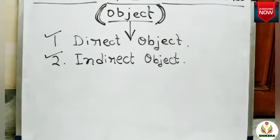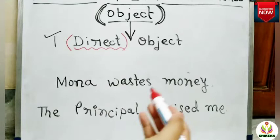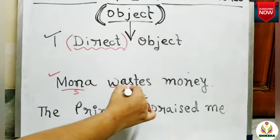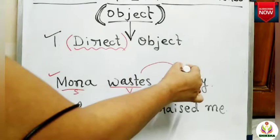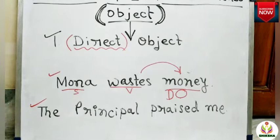There are two types of objects: direct object and indirect object. A direct object is the word or phrase that receives the action directly. For example, 'Mona wastes money.' Mona is the subject, waste is the verb. What does Mona waste? Money. Here, money directly answers the question, so it is working as a direct object.